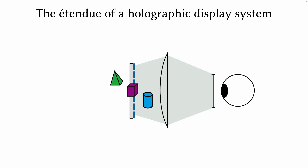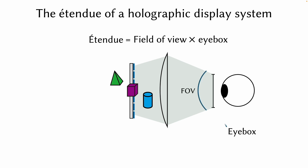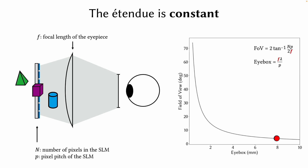An important design parameter of a holographic display is the etendue. It characterizes the information capacity of the display and can be calculated as the product between the field of view and the eyebox. For a given display, the etendue is constant, which is determined by the number of pixels in the display.